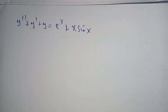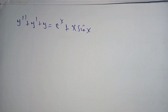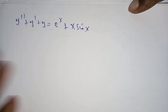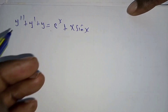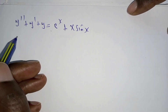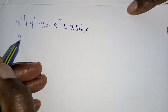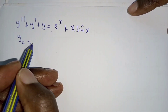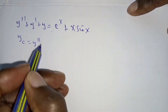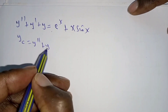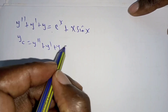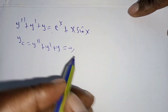Hello everyone, welcome to this ODE which we are required to solve. First of all, this consists of two parts: the Y complementary, which reduces to Y double prime plus Y single prime plus Y, which is equal to 0.